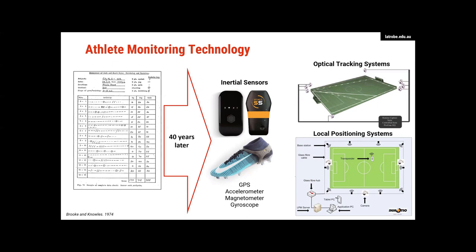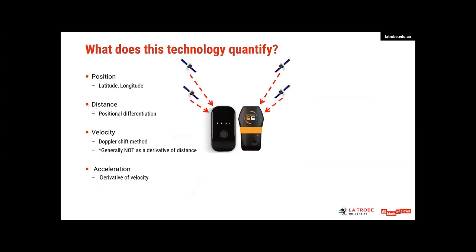Inertial sensors that have GPS, accelerometer, magnetometer, gyroscopes. We've got our optical tracking systems, our LPS systems, and more. One thing I really want to point out up front is I'm actually not going to talk about validity and reliability in the study for a couple of reasons. The first one is James Malone's going to talk about that a little bit more later on this evening. And I really wanted to focus more on the metrics that we use.